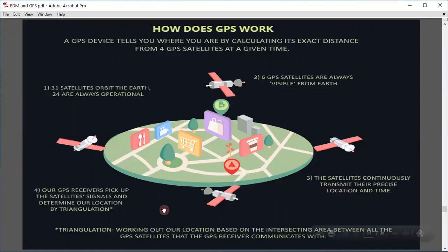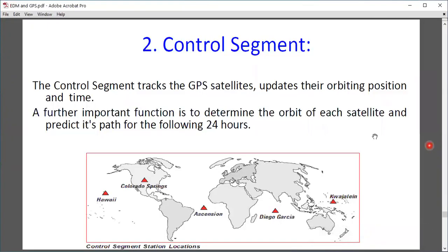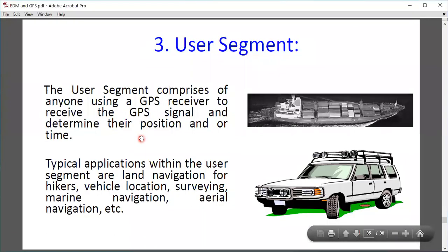Control segment: The control segment tracks GPS satellites, updates orbit position and time. An important function is to determine the orbit of each satellite and predict its path for the following 24 hours. The control segment tracks satellite positions and ensures the path is stable.